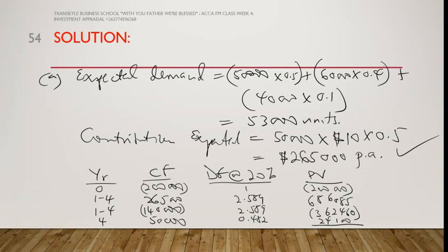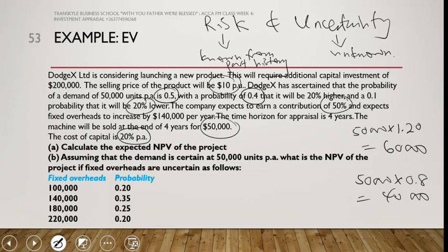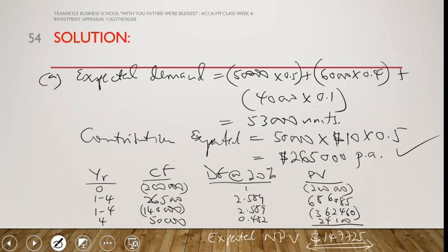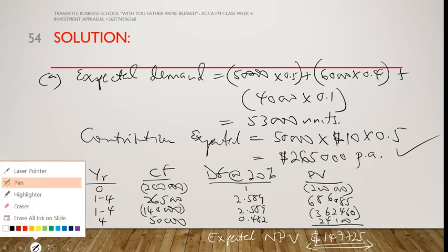Adding all these up, we get our expected net present value. The expected NPV is $147,725, which is positive.